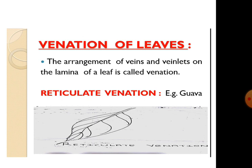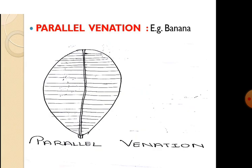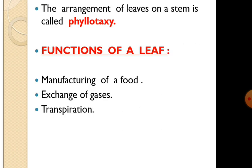Next, venation of leaves. The arrangement of veins and veinlets on the lamina of a leaf is called venation, and it is of two types. One is reticulate venation — for example, guava — where veins and veinlets are irregularly distributed over the entire lamina like a network. Another is parallel venation — for example, banana — where the veins arising from the mid-rib run parallel to each other. The arrangement of leaves on a stem is called phyllotaxy.